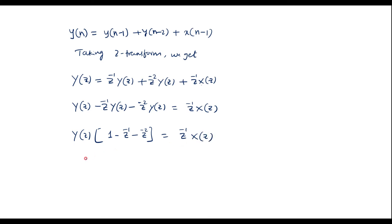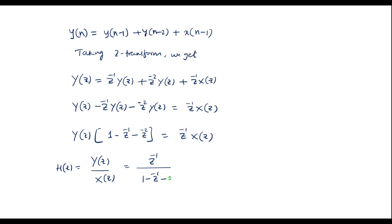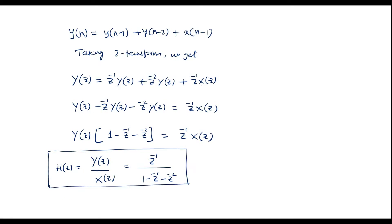So the system transfer function H(z) = Y(z)/X(z) = z⁻¹ / (1 - z⁻¹ - z⁻²). This is the system transfer function for the given difference equation. This is the answer for case 1. Call it equation 1.